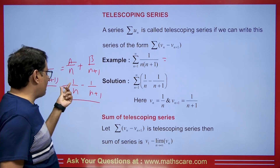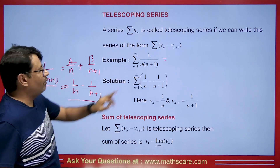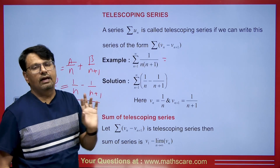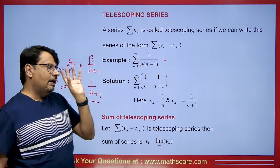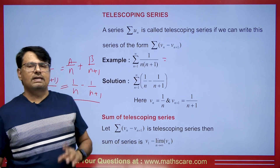It means this is the nth term and this is the (n+1)th term. We can write it like this. If this happens, then this is called a telescoping series.